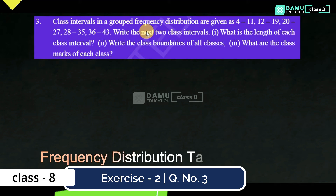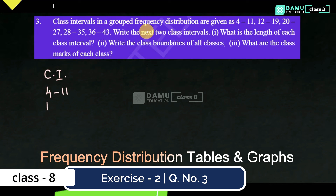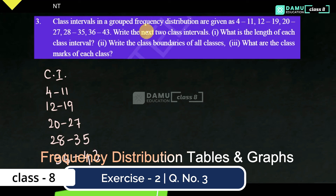Class intervals in a grouped frequency distribution are given as: 4–11, 12–19, 20–27, 28–35, 36–43. Which type of class interval is this? These are inclusive class intervals, because here the upper limit of one class and the lower limit of the next class do not match.